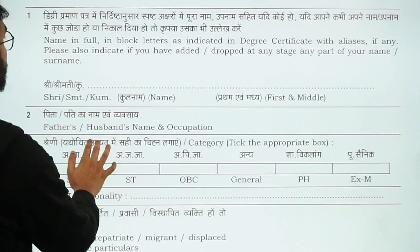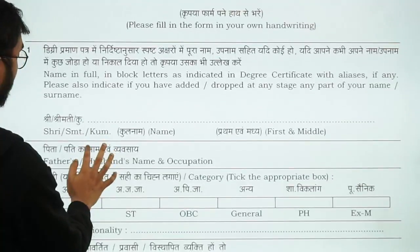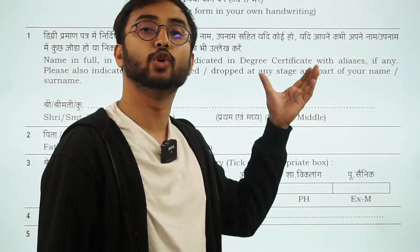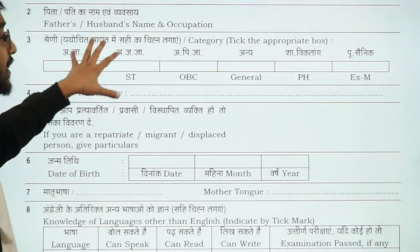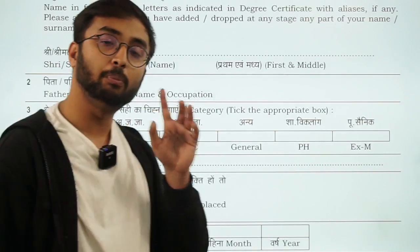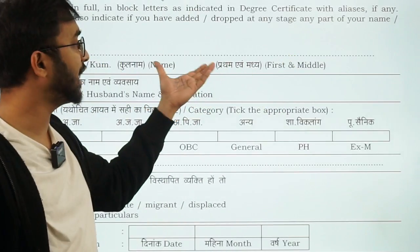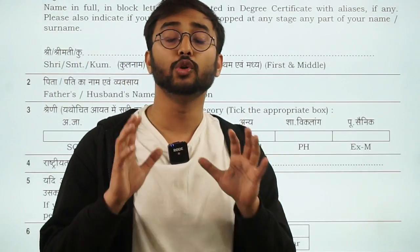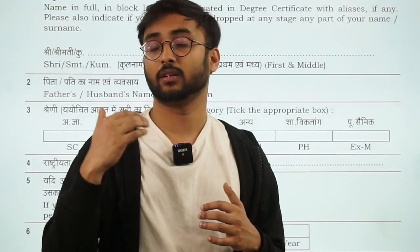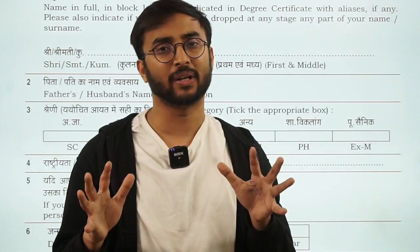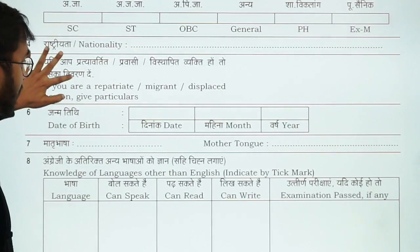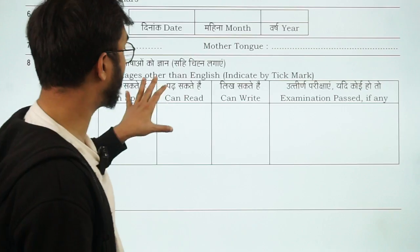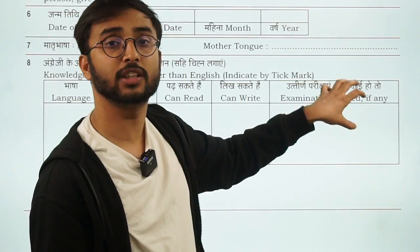The first information in the NABARD bio data form is personal information: your name, father's name and his occupation, and your category. One important aspect — if your name is unconventional, you should definitely know the meaning of your name, as government exam interview panels at any level — NABARD, RBI, SEBI — sometimes ask the meaning of your name. Then comes your date of birth, mother tongue, and the languages you can speak, read, and write, including any language examinations you have cleared.